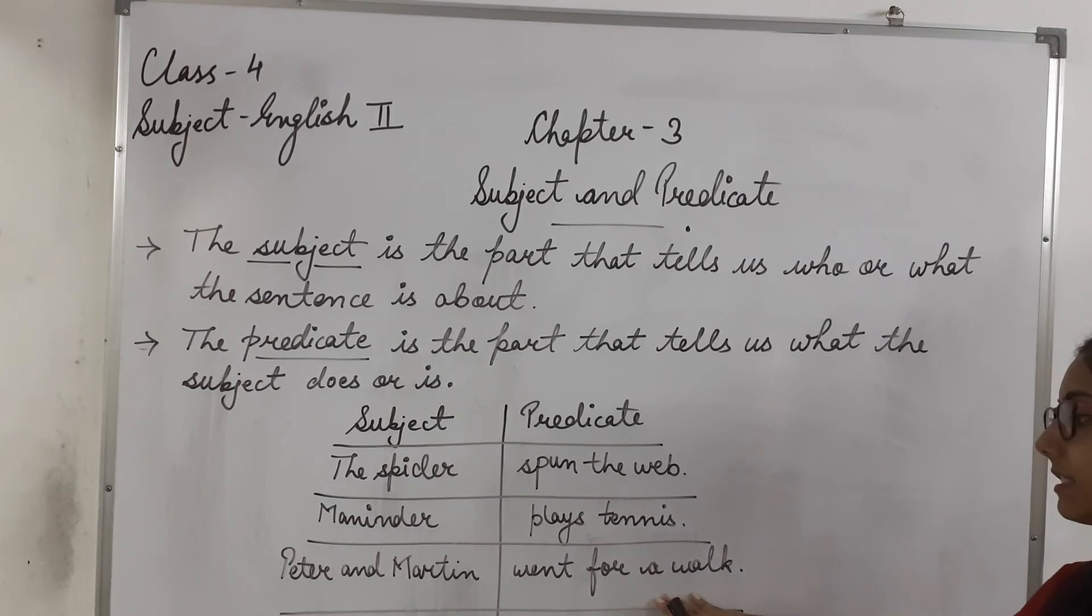And the rest of the sentence, jis mei wo jo activity kar rahe hai, that is went for a walk, going for a walk, that is our predicate.